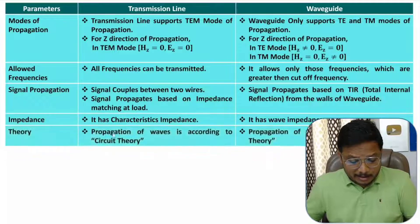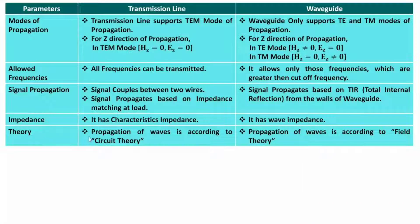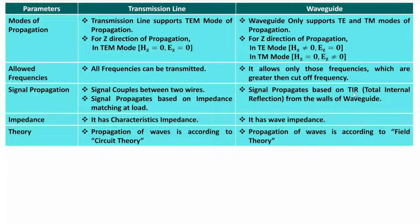The next parameter is what kind of theory is used to analyze each. For a transmission line, we use circuit theory — the equivalent circuit has R, L, G, C components from which we derive equations for characteristic impedance, input impedance, reflection coefficient, and VSWR. For a waveguide, we use field theory, discussing total internal reflection, different modes, cutoff frequencies, and wave propagation inside the waveguide.